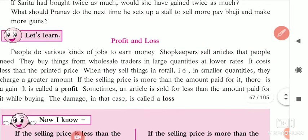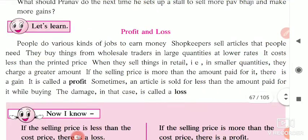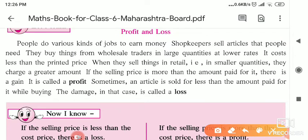Next, the definitions of profit and loss are given. People do various kinds of jobs to earn money — some are shopkeepers, some sell things on the road, some are vegetable vendors. Shopkeepers sell articles to people who need them. They buy things from wholesale traders in large quantities.